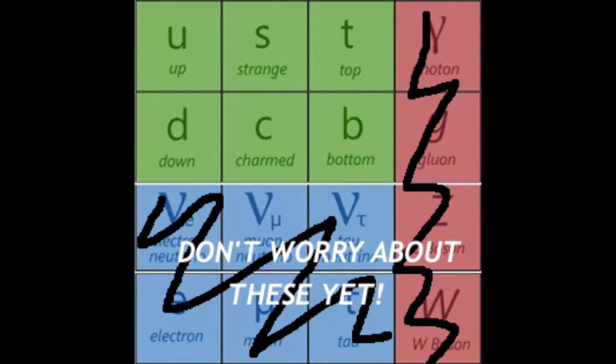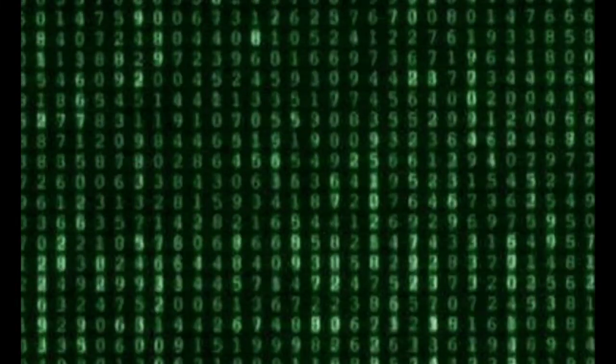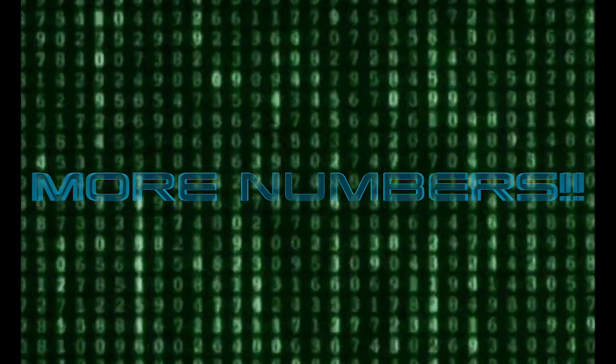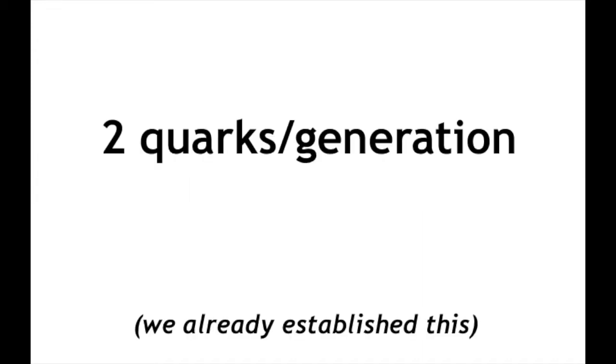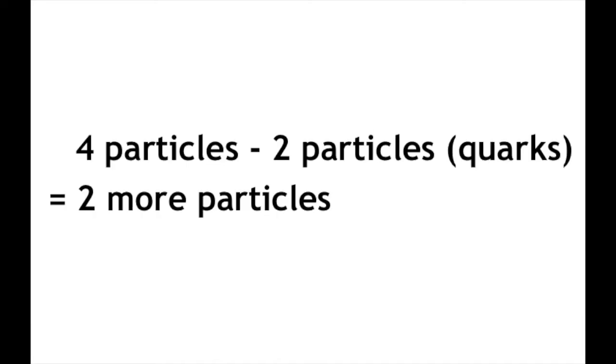There! Now you have half of the standard model of particles. Now that you got some basic numbers drilled down in your head, time for some more numbers. Just one small number. Are you ready? Great! So for each generation, there are four fundamental particles that make up all matter in a generation. There are two quarks per generation. This leaves us with two more fundamental particles per generation.